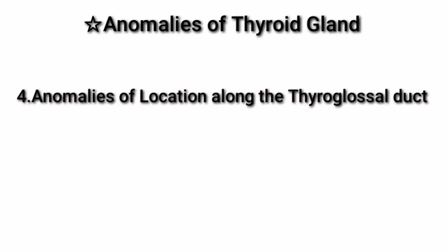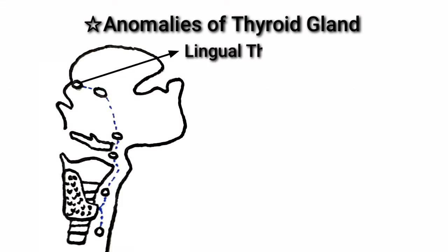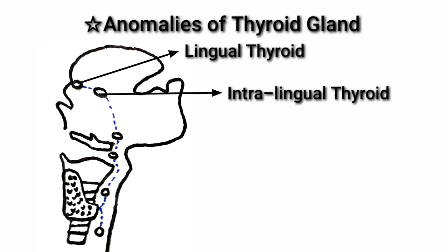Now, anomalies of location along the thyroglosal duct. This is the course of the thyroglosal duct. The thyroid gland can form in any position along the course of the thyroglosal duct. If the thyroid gland is formed just below the foramen cecum, this is called lingual thyroid. If the thyroid gland is formed in the substance of the tongue, it is called intralingual thyroid.